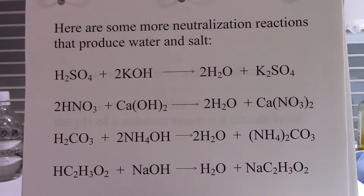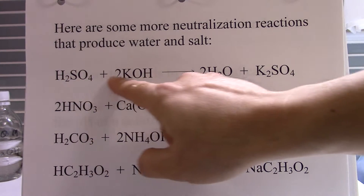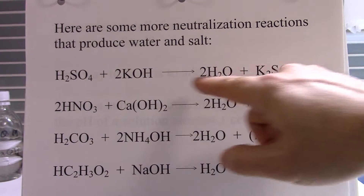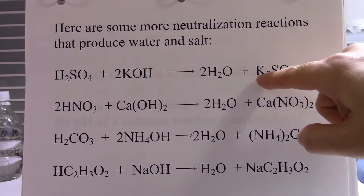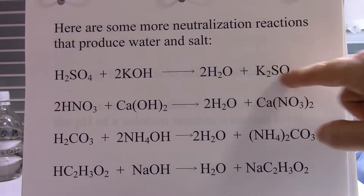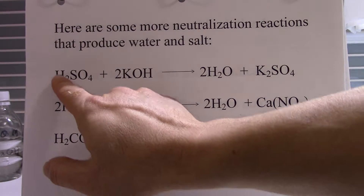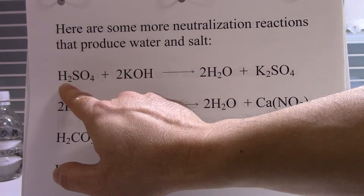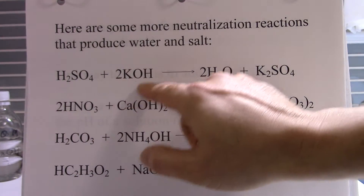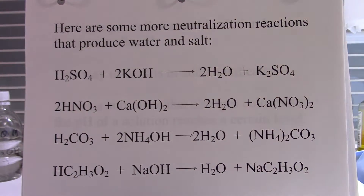Here are some more neutralization reactions that produce water and salt. Sulfuric acid and potassium hydroxide form water and potassium sulfate — this is a salt. Notice that we have two hydrogens from here combining with two hydroxides to form two water molecules.